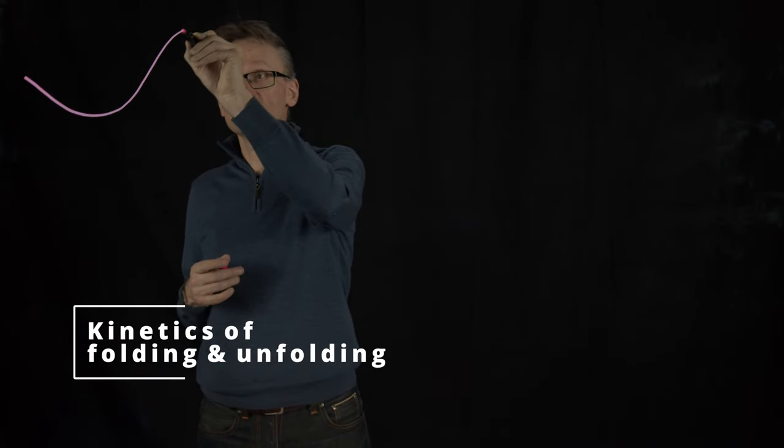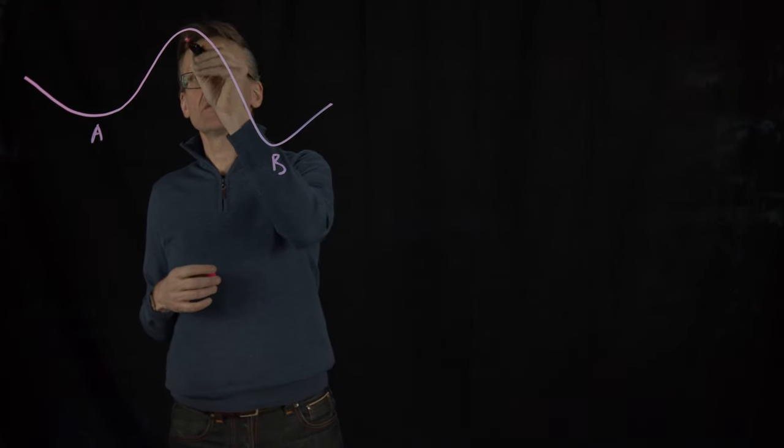So if we have one of these processes that we've looked at many times before, we have an A state, a barrier, and a B state.